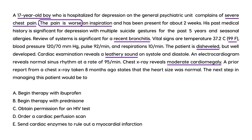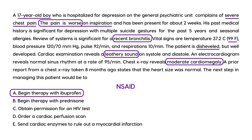He's got pleuritic chest pain, a very characteristic heart sound on auscultation, a recent bronchitis, and chest x-ray showing an enlarged heart — all the telltale signs of pericarditis. The first step in management is NSAIDs — naproxen or ibuprofen — so the answer is choice A. If refractory, you might proceed with prednisone.